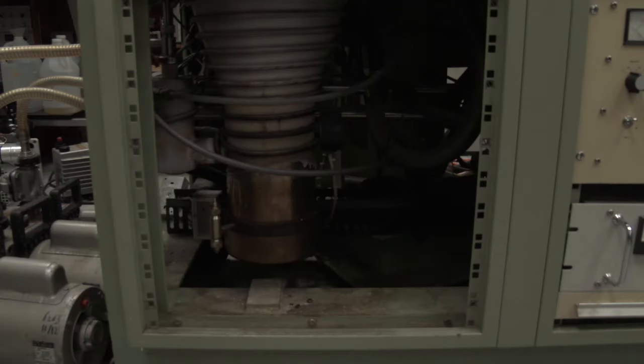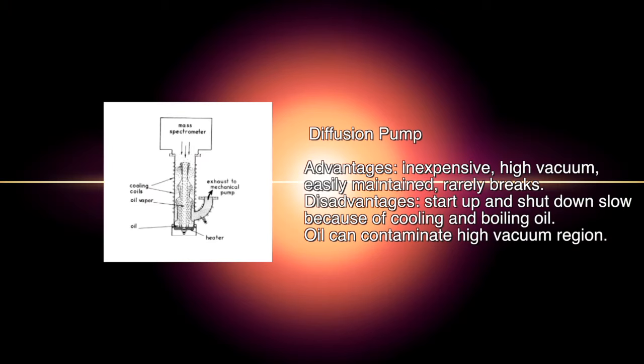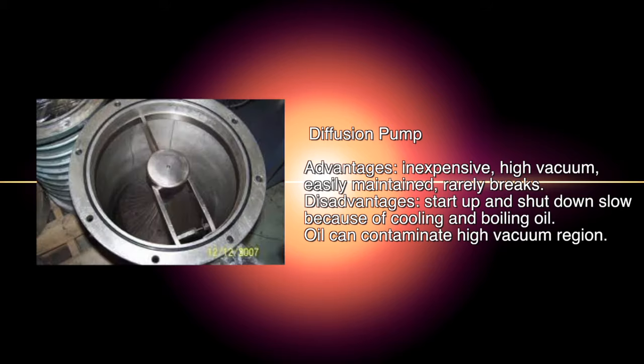These rotary pumps can be seen backing up a diffusion pump, which is used to get down to a much higher vacuum—10 to the minus 7 millibars and beyond. It works by heating to boiling point a very expensive low-pressure oil. This oil passes through nozzles, picking up air molecules, and these condense on the cool walls of the pump where they are removed by the vacuum pump.